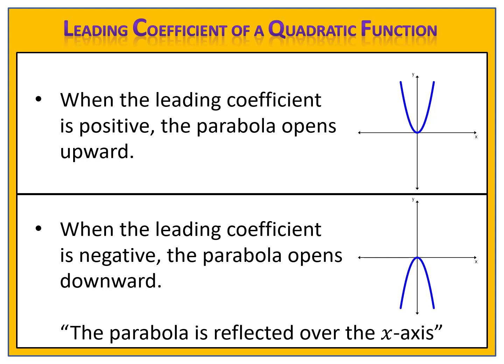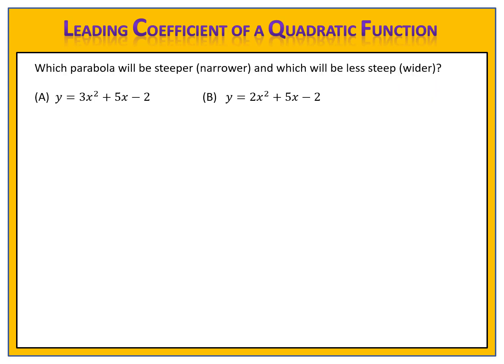So now, as you can see, the leading coefficient tells us quite a bit. It tells us whether the parabola will be steeper or wider, and also whether the parabola will open upward or downward. Let's look at a couple of examples. Here are two quadratic functions: y equals 3x squared plus 5x minus 2, and y equals 2x squared plus 5x minus 2. Which of these parabolas will be steeper or narrower, and which will be less steep or wider? Please pause the video here and come back when you're ready.